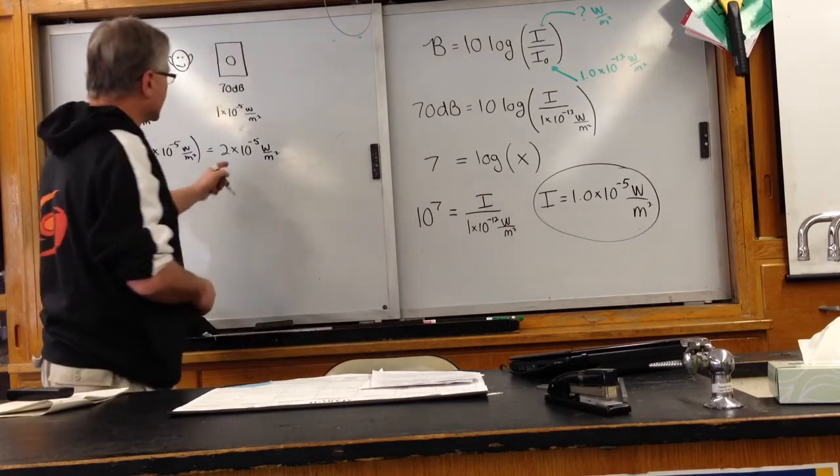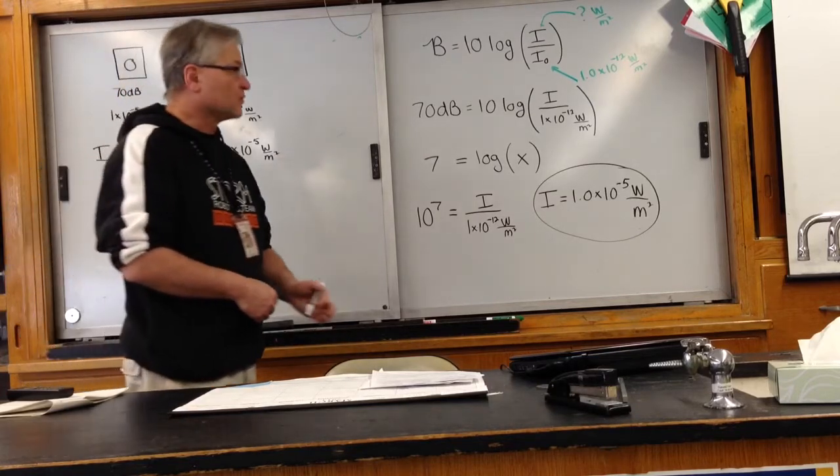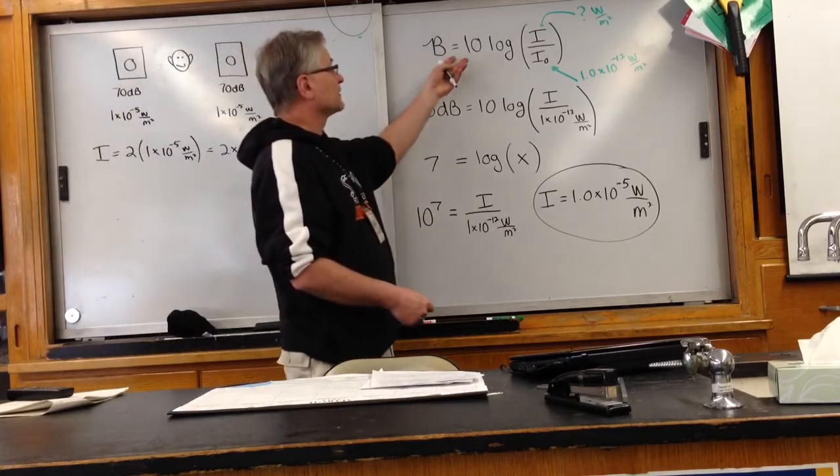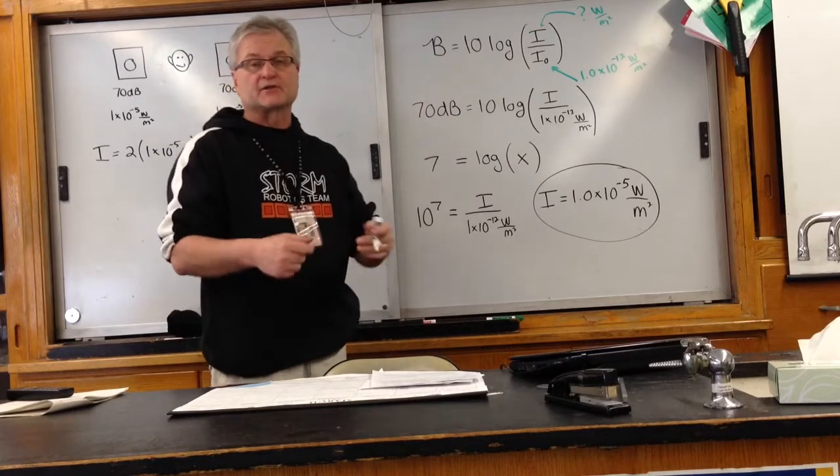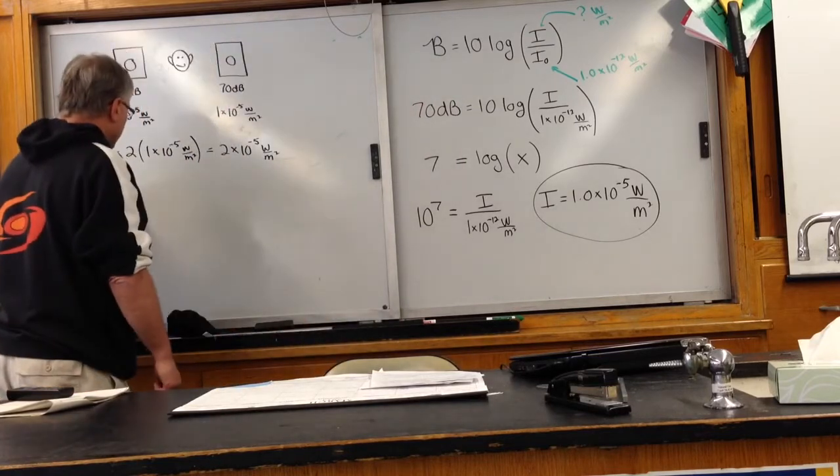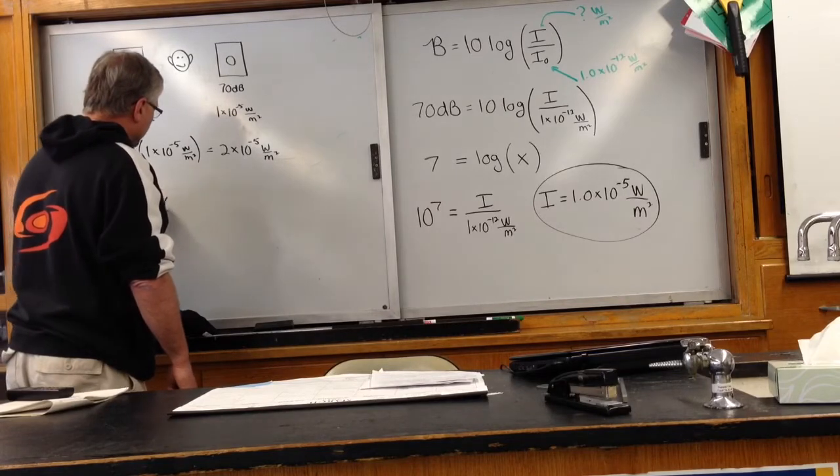Well, now that I've got it in the form of watts per meter squared, do I have a formula that allows me to convert it into decibels? And the answer is, sure I can. So beta, the amount of decibels, is going to be equal to 10 log.